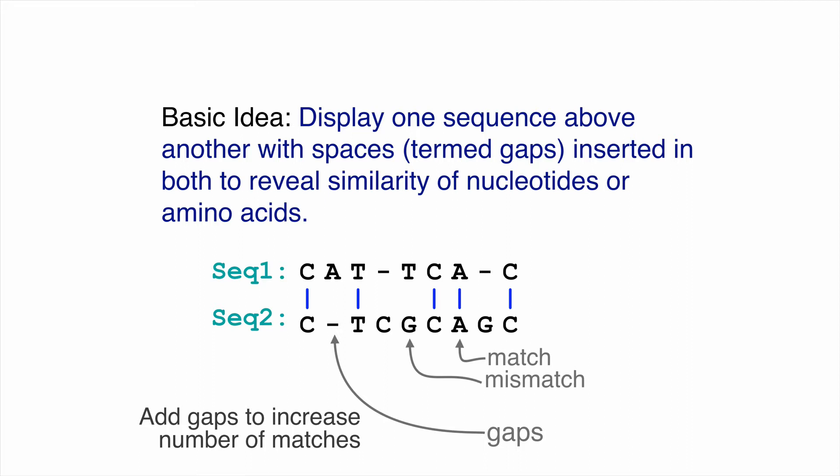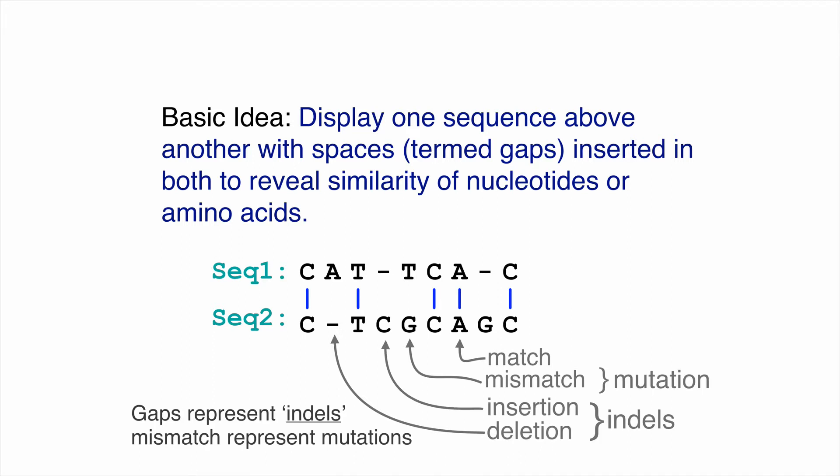With alignments, we can add dash characters — we'd use spaces but no one can see white space — so we add these dashes and call them gap characters. We add them to one or both sequences to try and increase the number of matches we see, those blue vertical lines indicating identical characters in Seq1 and Seq2. If we consider the alignment as reflecting the evolutionary history of these two sequences, mismatches represent substitutions, also known as mutations — where one character has changed into another. And these gaps where we put the dashes represent either insertions or deletions.